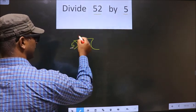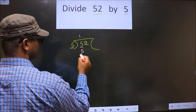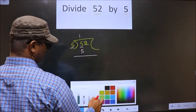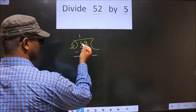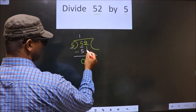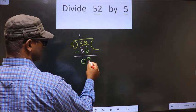When do we get 5 in 5 table? 5 once 5. Now you subtract. Now you get 0. Now you bring this number down that is 2.